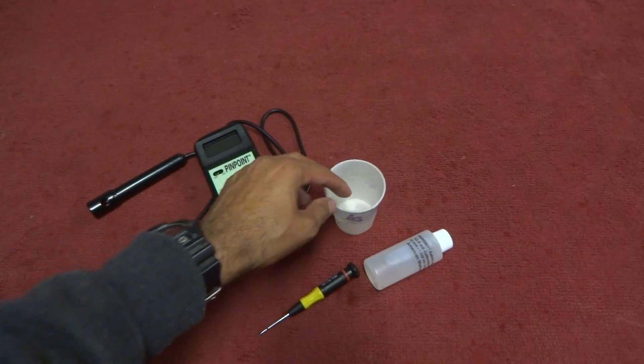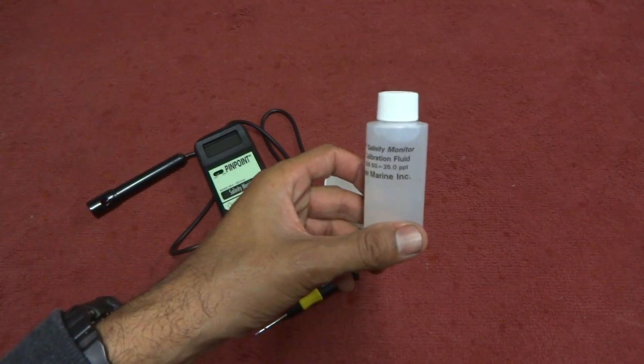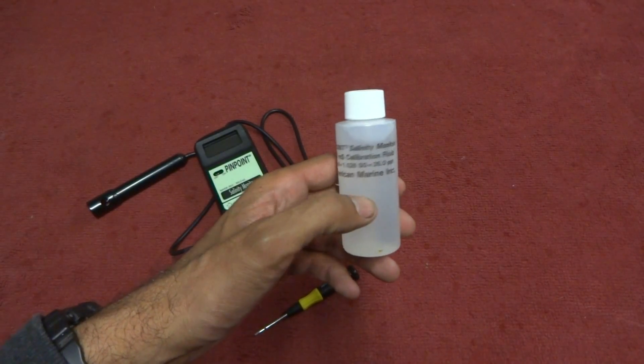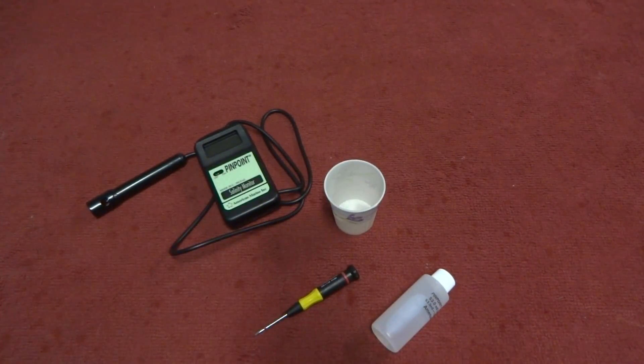In my case I'm using a paper cup and the probe for the salinity monitor itself. This salinity calibration fluid can be reused so long as it's not contaminated by any other liquids and so long as you're using a clean container.